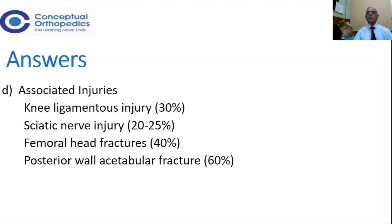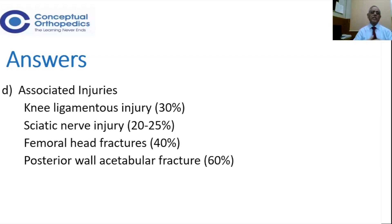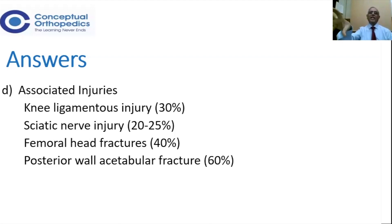20 to 25% of these can have sciatic nerve injuries. Femoral head fractures vary from 20 to 40%, though it is written as 40% in some series. Associated posterior wall acetabular fracture will be as much as 60%. It depends on the attitude of the limb and how the impact shattered the bone.